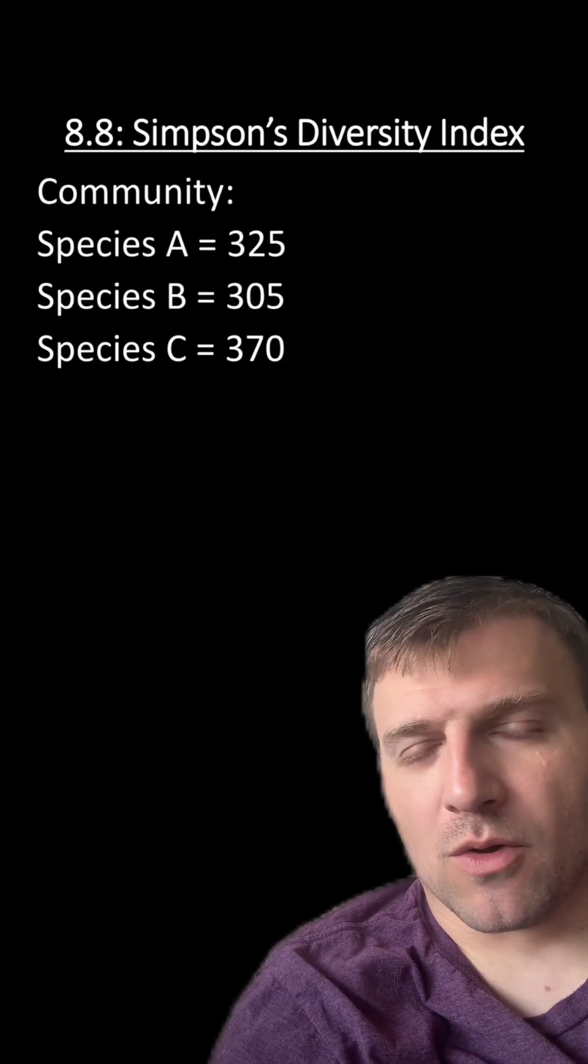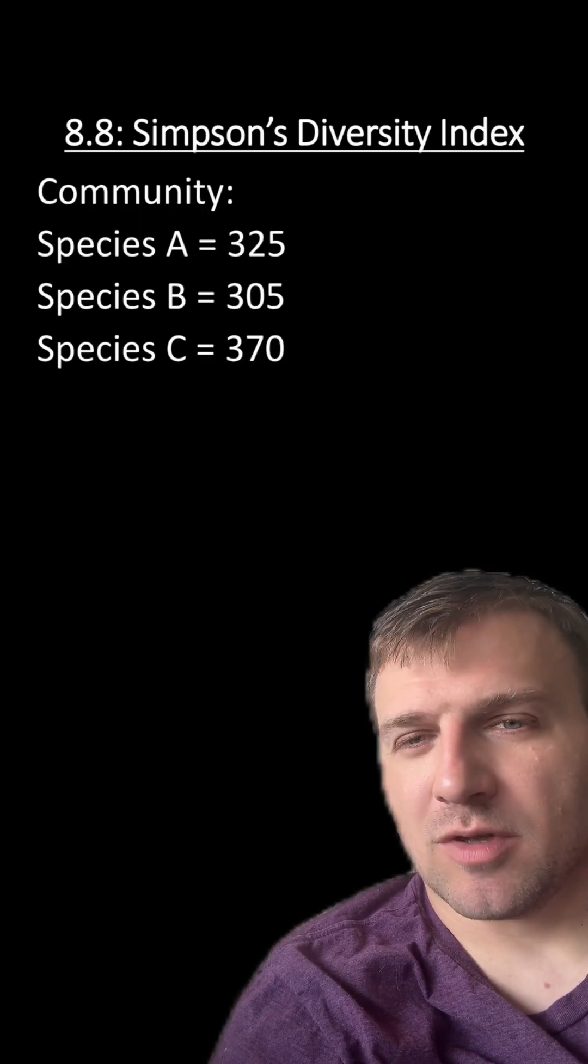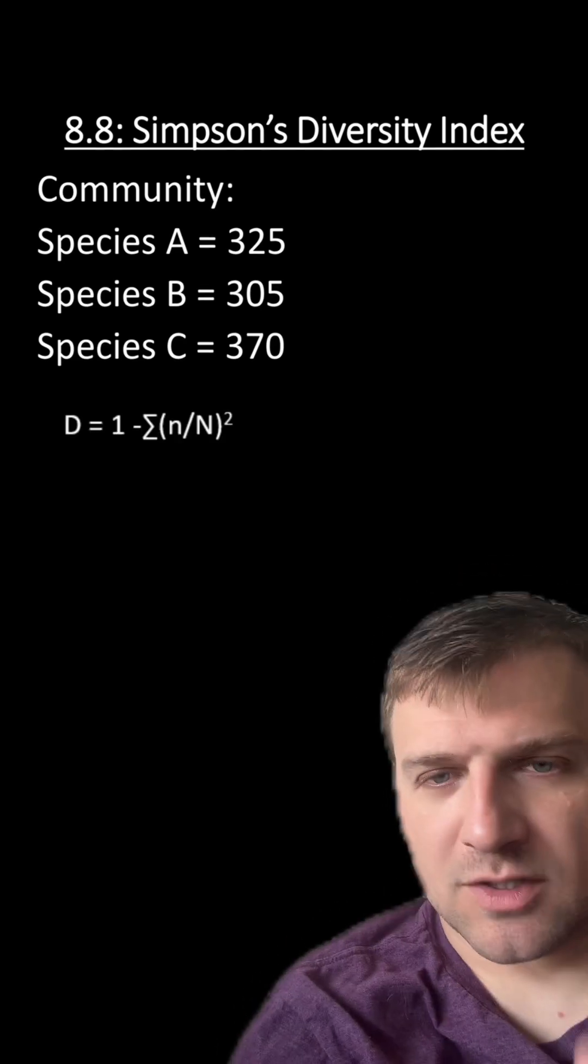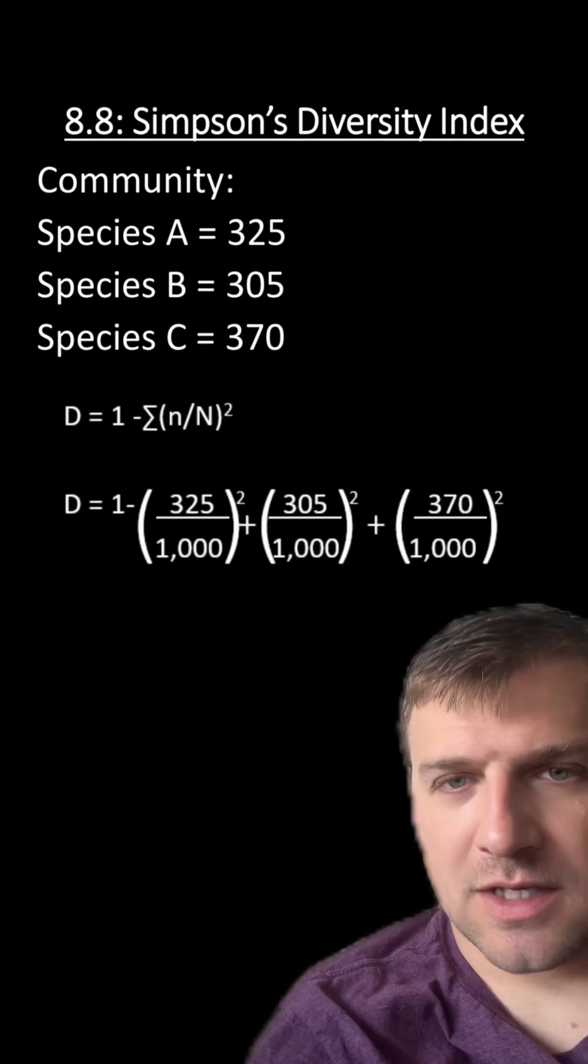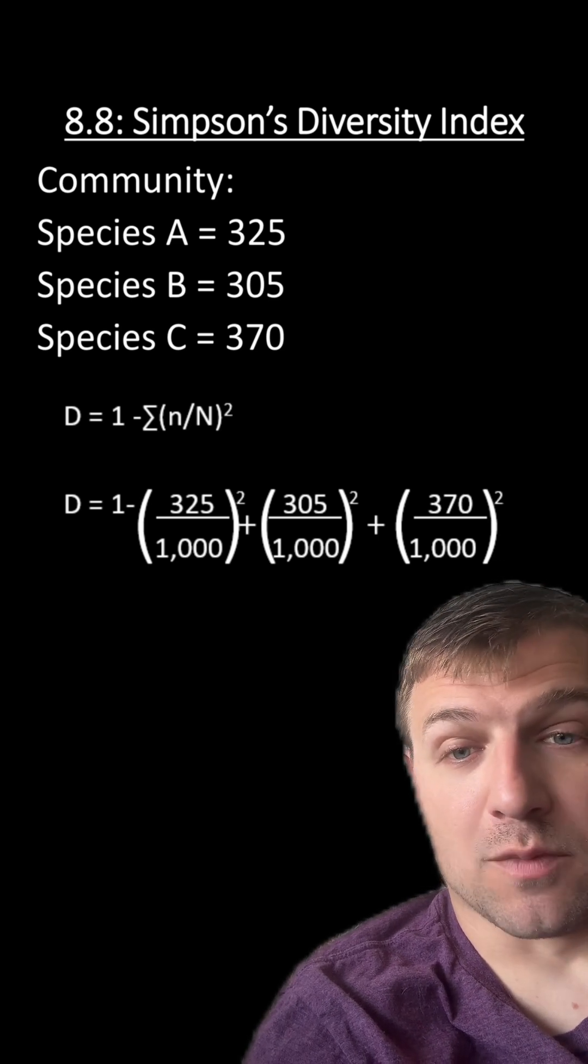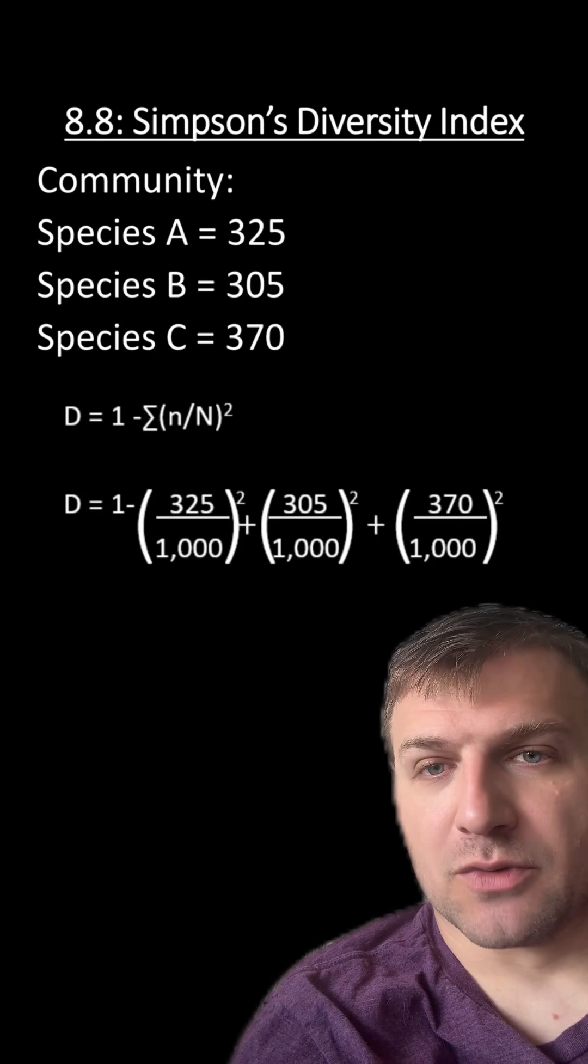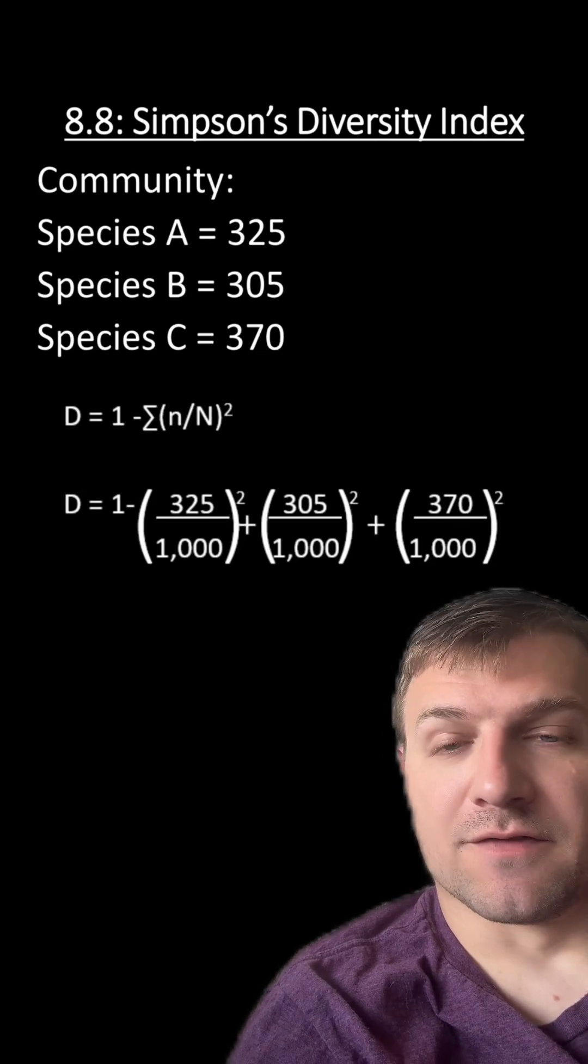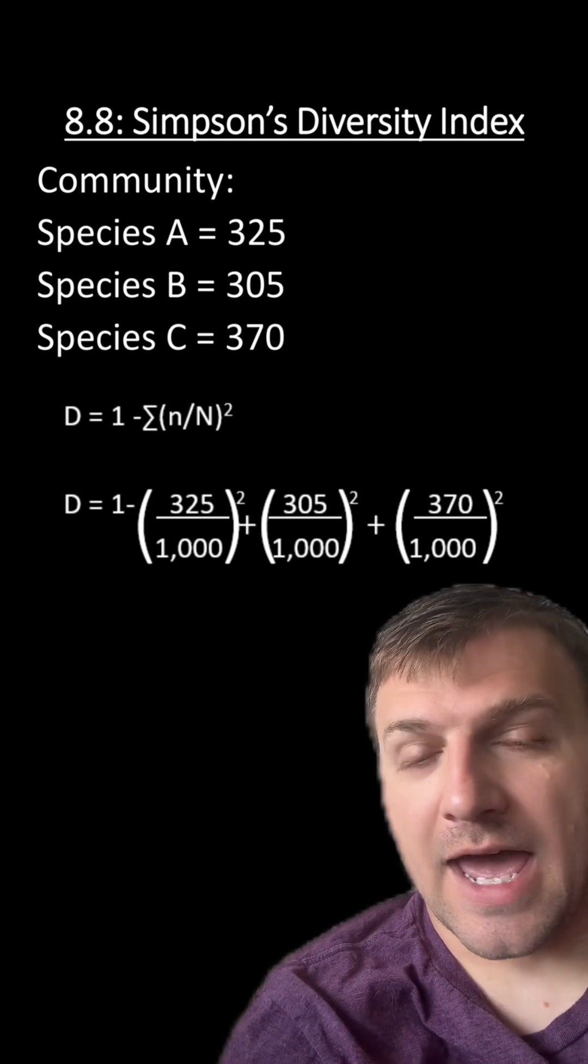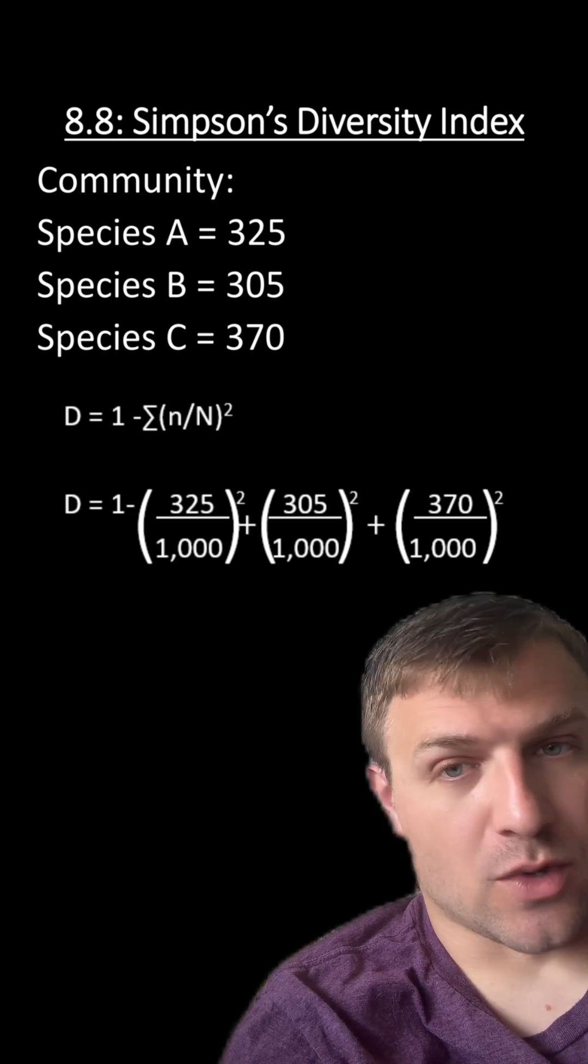Let's do a practice problem using this equation. You can see in this community, we have three species with relatively equal numbers. We're going to use our equation here. If we add up all of these species organisms into one final population, it's going to equal 1,000. So what we do is we place each species divided by that 1,000 number, that's the total population. And we're going to add all those together after we square them.